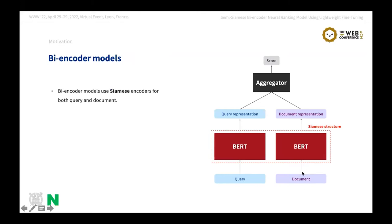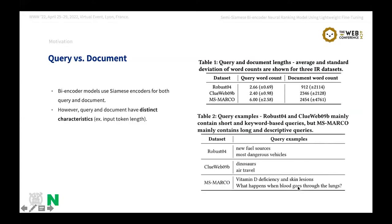As you can see here, existing bi-encoder models use Siamese BERT encoders for computing both query and document representations. I mean by Siamese structure, we use the same BERT weights for processing the query and document. However, a query and document have distinct characteristics. For example, when we analyze the characteristics of the datasets which we experimented with, for example, Robust, Clueb, and MS-Marco, we can see that a document contains about 1,000 words, and here about 2,000, more than 2,000 words, while a query has only a few words.